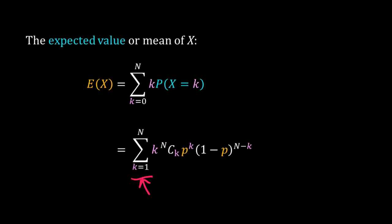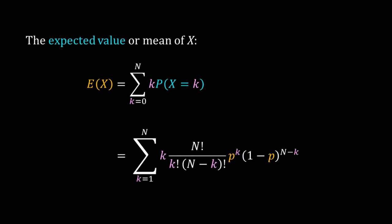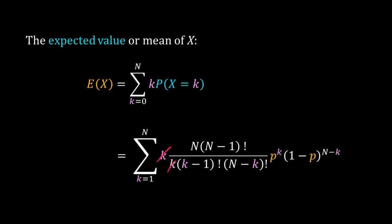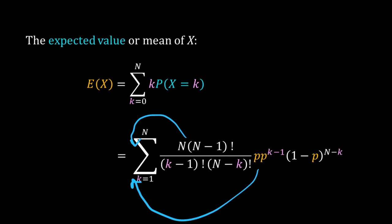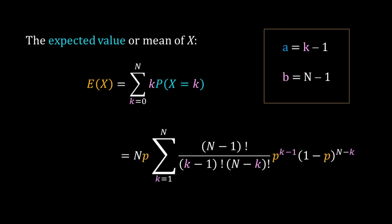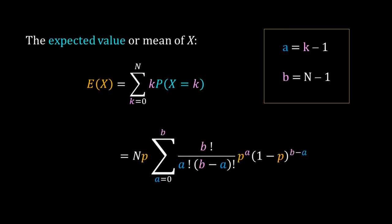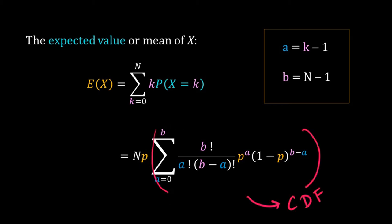We expand n-choose-k and cancel k in the denominator. Then p^k is written as p times p^(k−1). Since p and n are independent of k, we take those out of the summation. We then substitute a = k − 1 and b = n − 1, noting that the range of summation changes accordingly. This remaining summation is the CDF for the binomial distribution, so it equals 1.